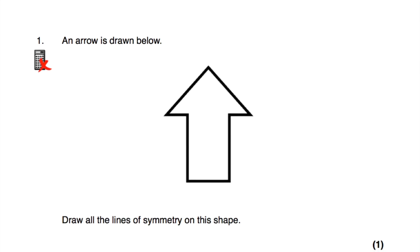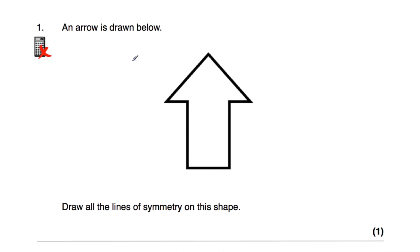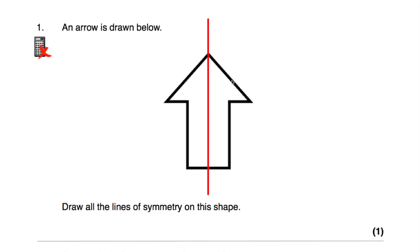Question number one: an arrow is drawn below and we've been asked to draw all the lines of symmetry on the shape. This arrow would have one line of symmetry — a vertical line of symmetry passing through the middle. That would be the line of symmetry, and there are no other lines of symmetry. So that arrow has one line of symmetry.